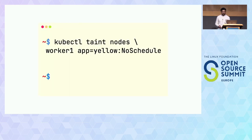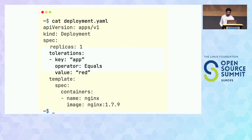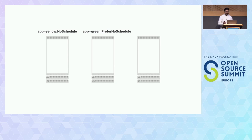There are three effects: NoSchedule, PreferNoSchedule, and NoExecute. It's better to remember them as hard, soft, and evict. For example: I taint the first node with app=yellow NoSchedule, and the second node with app=green PreferNoSchedule. If I try to deploy a red pod with toleration app=red, the scheduler looks at the first node — the pod doesn't tolerate app=yellow, so it gets rejected. It goes to the second node — PreferNoSchedule means if you can't run it elsewhere, you can come here. The third node has no taint, so the pod deploys there.